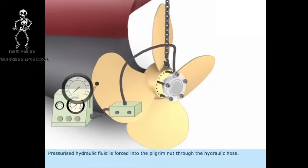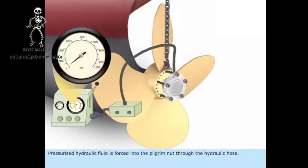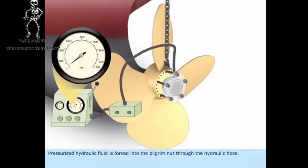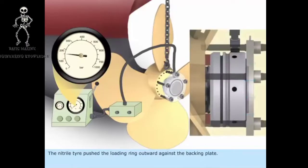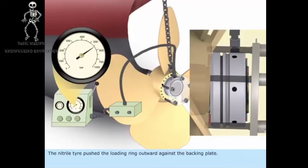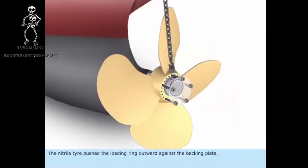Pressurized hydraulic fluid is forced into the pilgrim nut through the hydraulic hose. The nitrile tire pushes the loading ring outward against the backing plate.